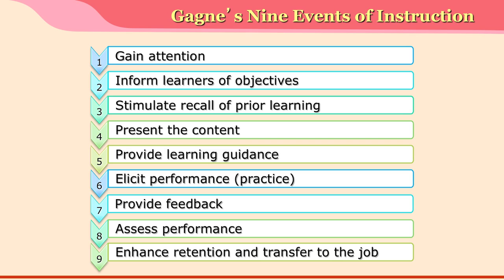The 9 events are: gain attention, inform learners of objectives, stimulate recall of prior learning, present the content, provide learning guidance, elicit performance (also called practice), provide feedback, assess performance, and enhance retention and transfer to the job.